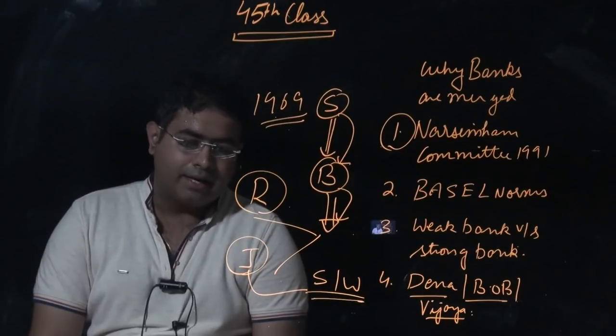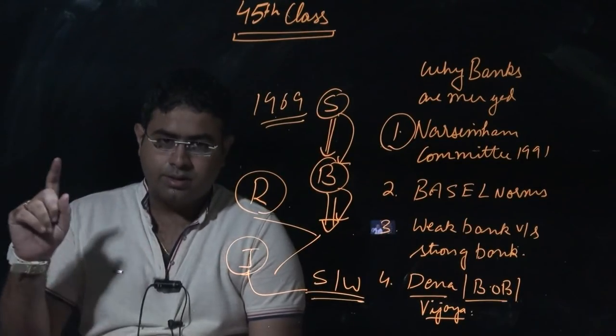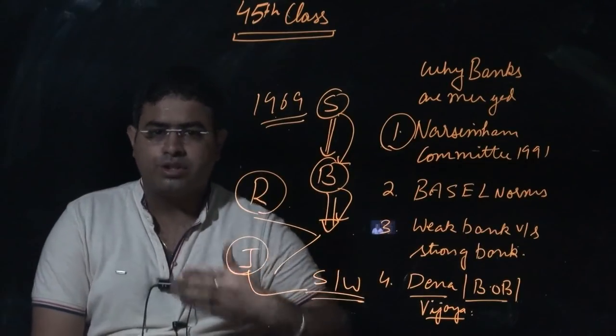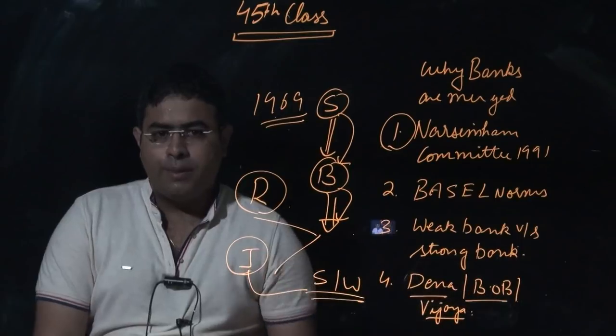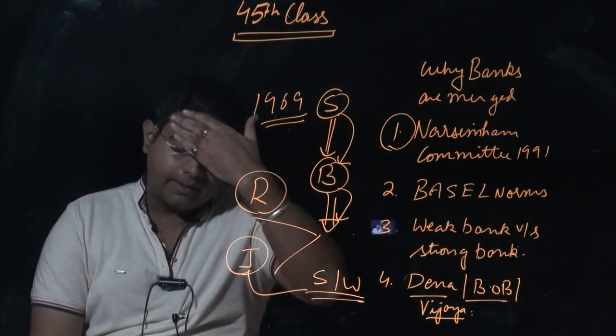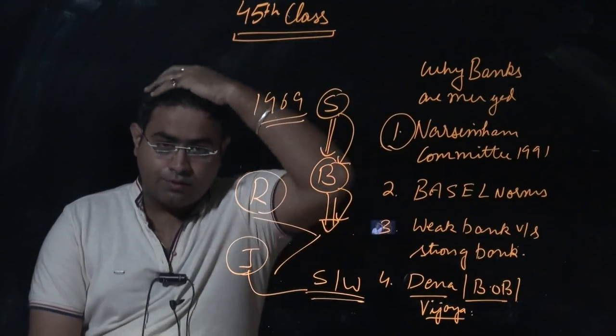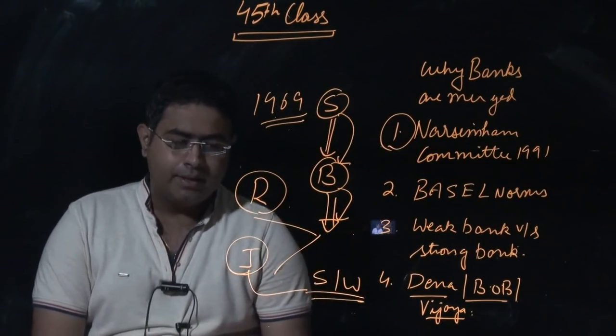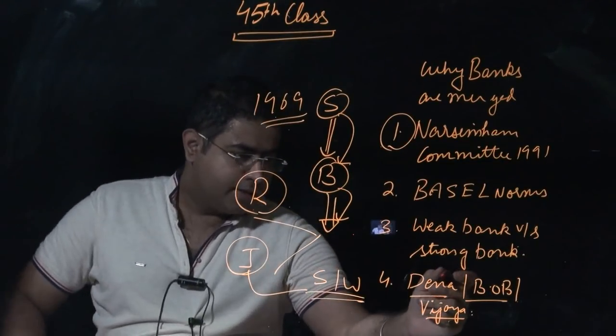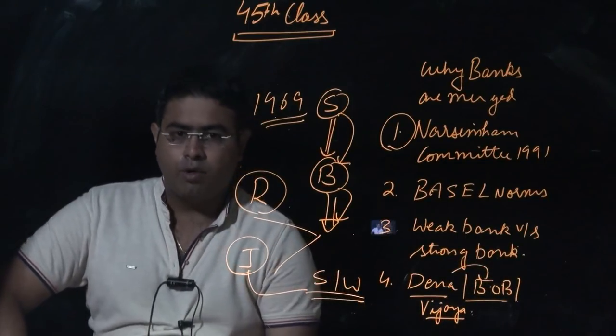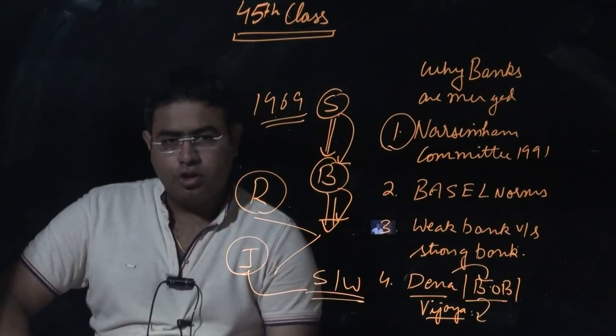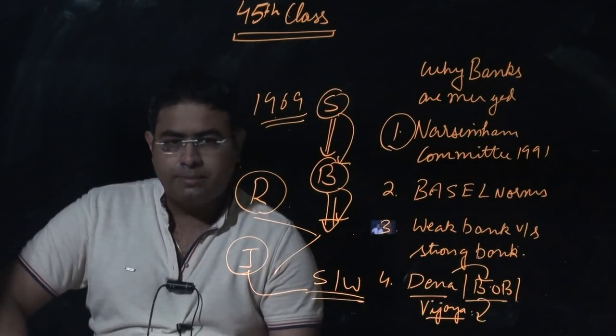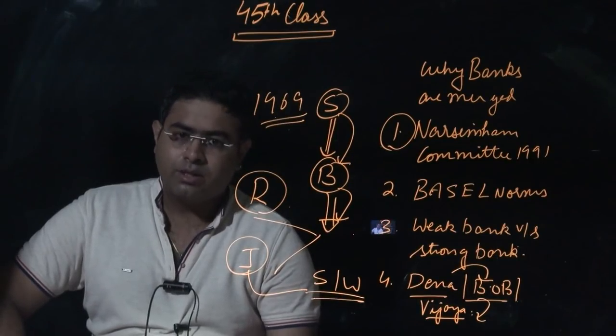In the present scenario, the government has proposed to merge three banks. The government is the biggest shareholder in these banks. The first bank is Dena Bank, which has maximum NPA out of all three banks - Dena Bank is the weak bank. Whereas Bank of Baroda and Vijaya Bank have relatively less NPA. Bank of Baroda has concentration more or less in North India, and Dena and Vijaya Bank have concentration in South India.